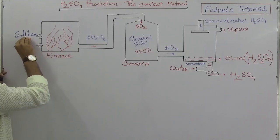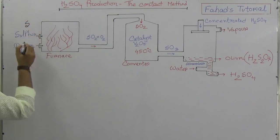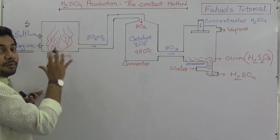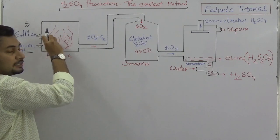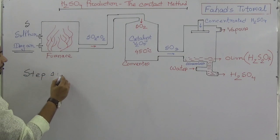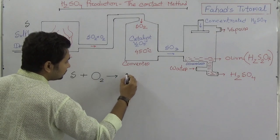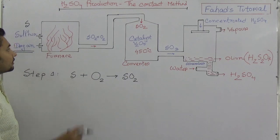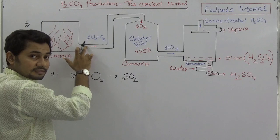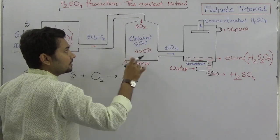Firstly, we get sulfur from the Frasch process. In Step 1, sulfur and dry air are channeled into a furnace where they are heated to produce sulfur dioxide. So in the furnace, sulfur dioxide is produced, and with more oxygen it is channeled to another converter.